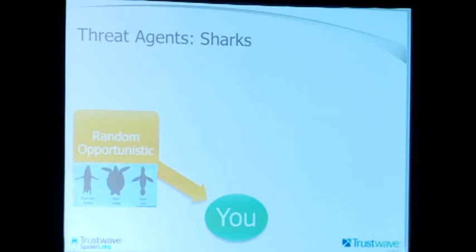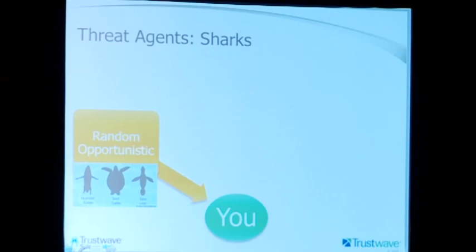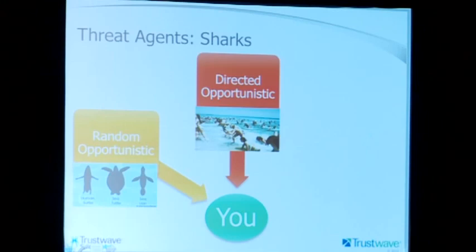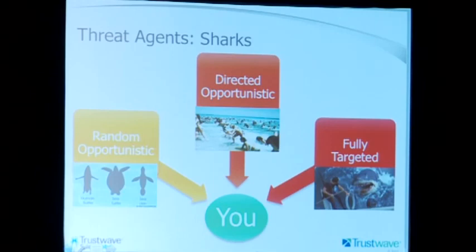Three general categories of threat agents. The first is random opportunistic — sticking with the shark theme, you're out surfing, the shark is hungry and looking for something to eat. The surfer looks like a sea turtle from below; they bite you, it was a mistake, the shark lets go, but the damage is done. The second is directed opportunistic — there's a crowded beach, lots of food, they go in. The third is targeted, like Jaws versus Sheriff Brody — that is a targeted attack. Jaws wanted him specifically. It's important to understand why someone is attacking your site.